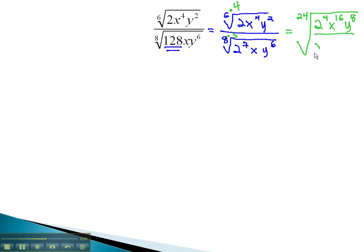In the denominator, we have 2 to the 21st, x to the 3rd, y to the 18th.